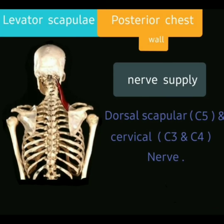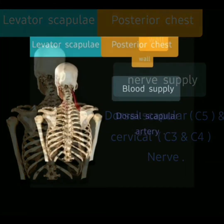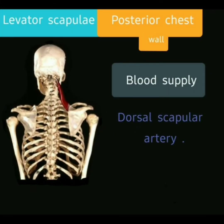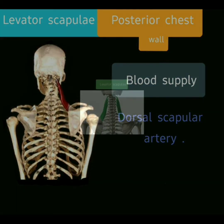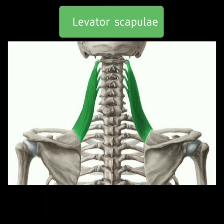Nerve supply: The levator scapulae muscle is supplied by the dorsal scapular nerve, with root values of cervical 3, cervical 4, and cervical 5. Blood supply: The levator scapulae muscle is supplied by the dorsal scapular artery.